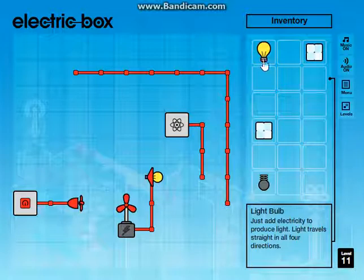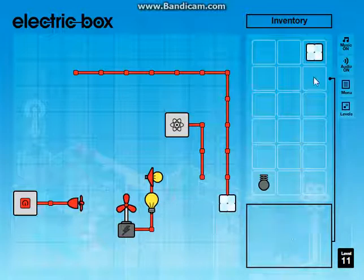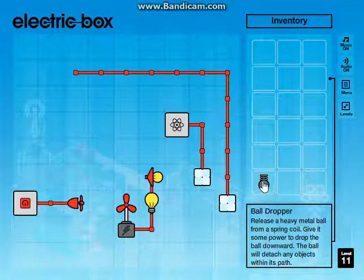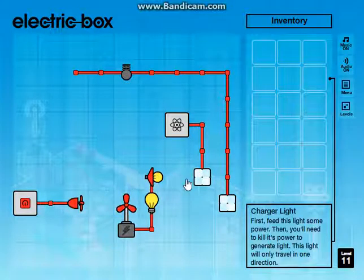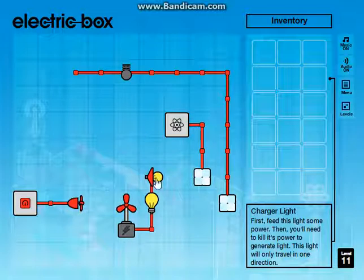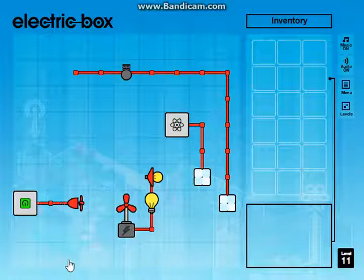We're going to want to have this light bulb right here, so that it powers this, and a solar panel. We're also going to want a solar panel right here, and we're going to want to destroy this, so that this light block that requires there to be no electricity current starts to work. Let's power it all up and hope it works.